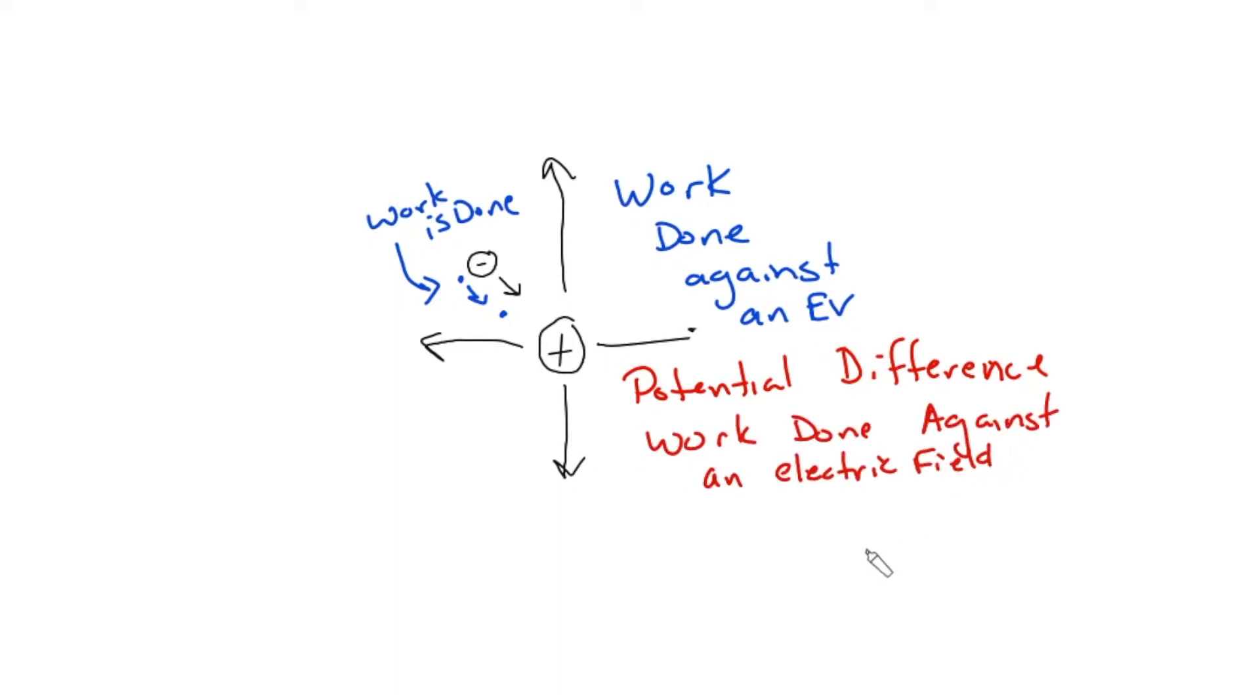And remember, for work to be done, it has to be done between two points. If we look at the formula for potential difference, we could say that some potential difference is going to be the work done on a charge moving through. Now, the symbol for potential difference is going to be capital V, big V.